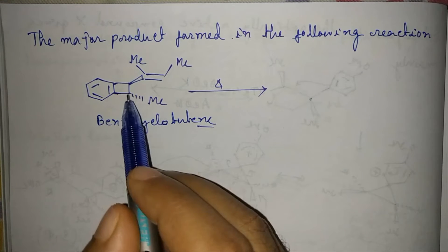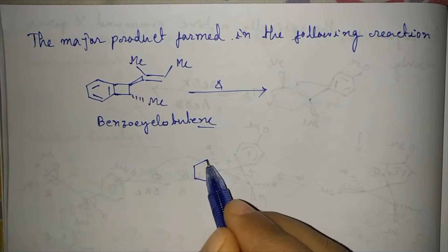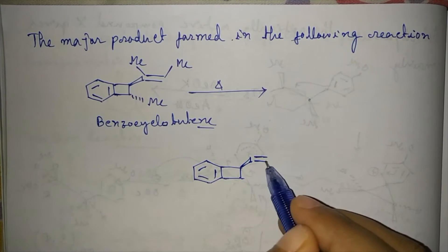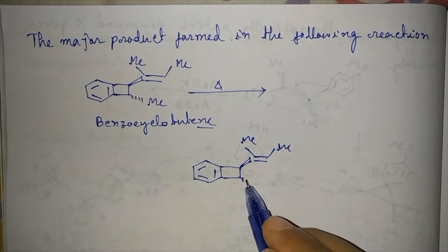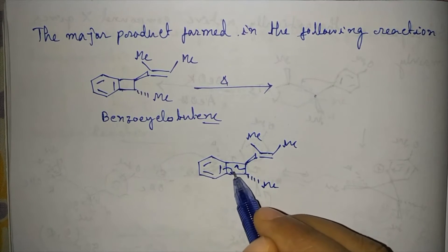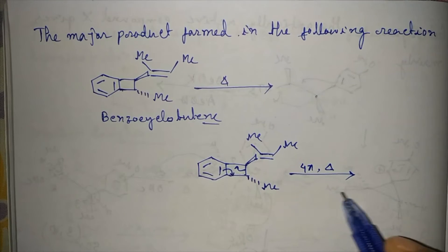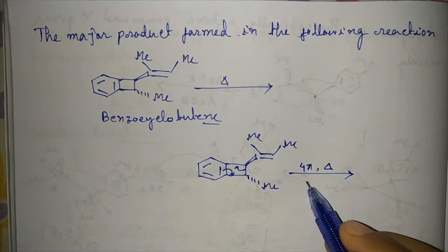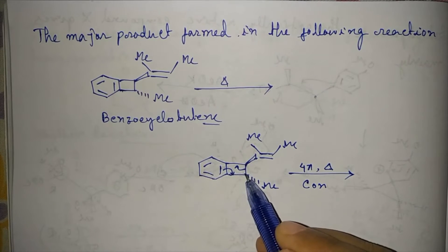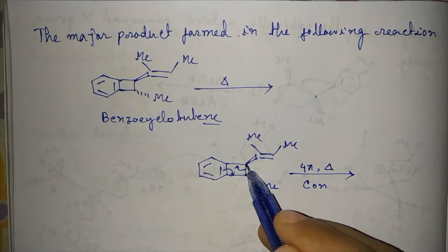This four-membered ring is quite strained and will undergo an electrocyclic ring opening reaction. One group is above the plane and the methyl group is below the plane. This is a 4π electronic system, so under heating conditions the preferential mode of rotation will be conrotatory — that is, both carbons will rotate in the clockwise or anticlockwise direction.